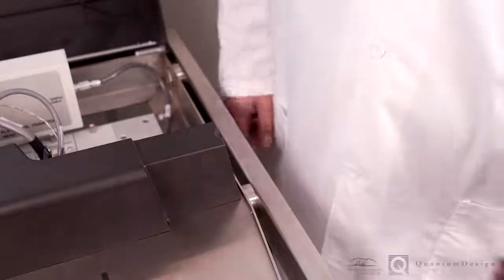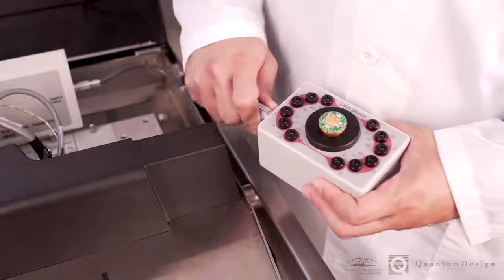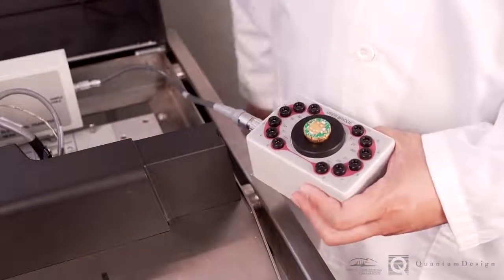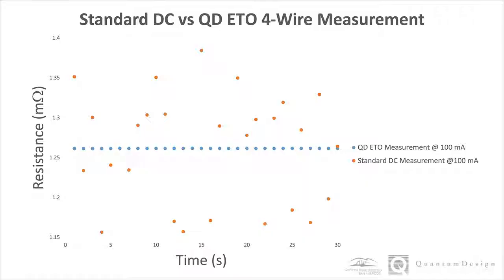Now we will perform a 4-wire measurement on the copper wire using the ETO module and compare that to measurements obtained using a standard DC source and voltmeter. We take a reading every second. When you compare the standard DC measurement in orange to the Quantum Design ETO measurement in blue, you can see that the ETO performs a far less noisy measurement at this level.